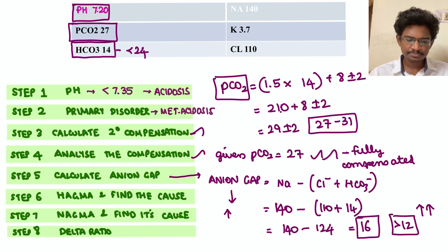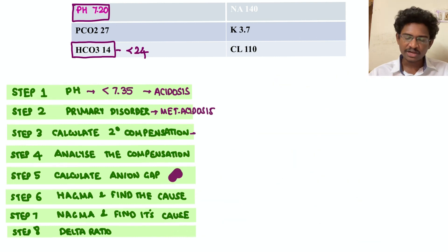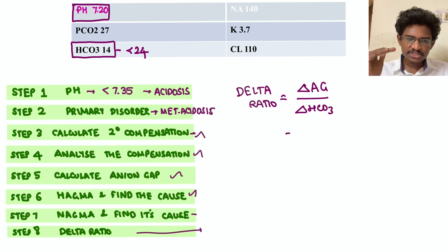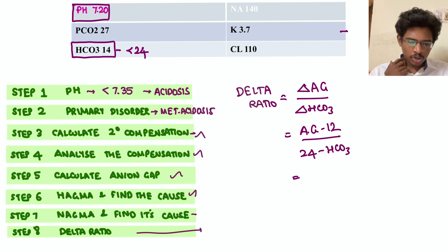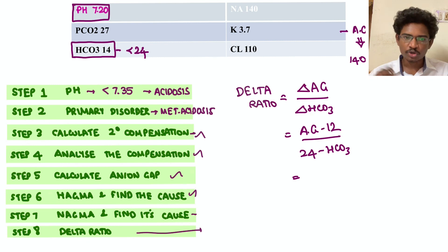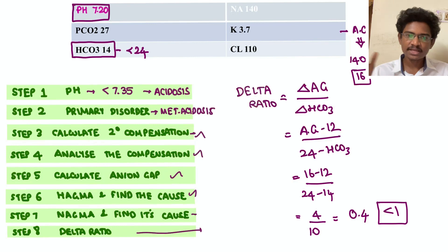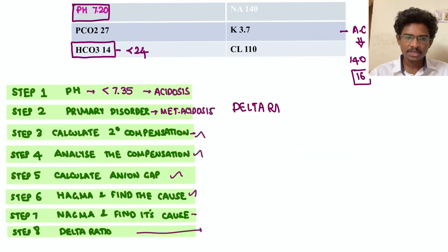Step six: delta ratio = change in anion gap / change in bicarb = (16 − 12) / (24 − 14) = 4/10 = 0.4. A delta ratio less than 1 indicates HAGMA plus NAGMA coexisting. So the answer is HAGMA plus NAGMA with compensation.